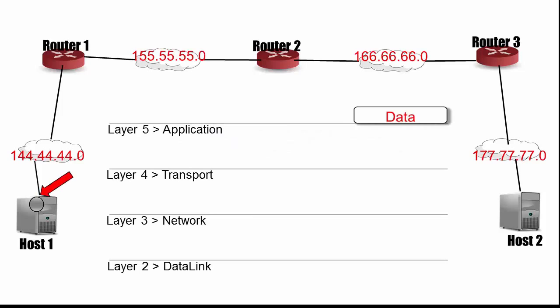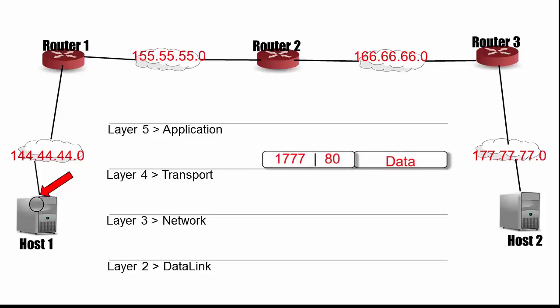Let's see what's happening inside of host 1. Data from its application layer, which happens to be HTML information, is sent down to the transport layer. At the transport layer, we add a header to the data. This transport layer header has a source port of host 1 and a destination port of host 2. Note that the transport header, together with the data, is called a segment.